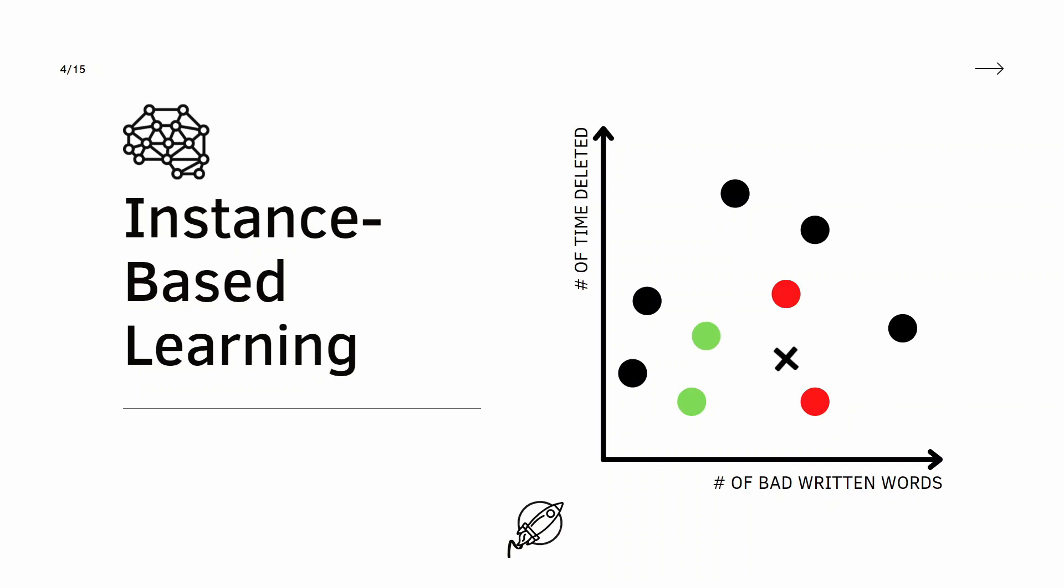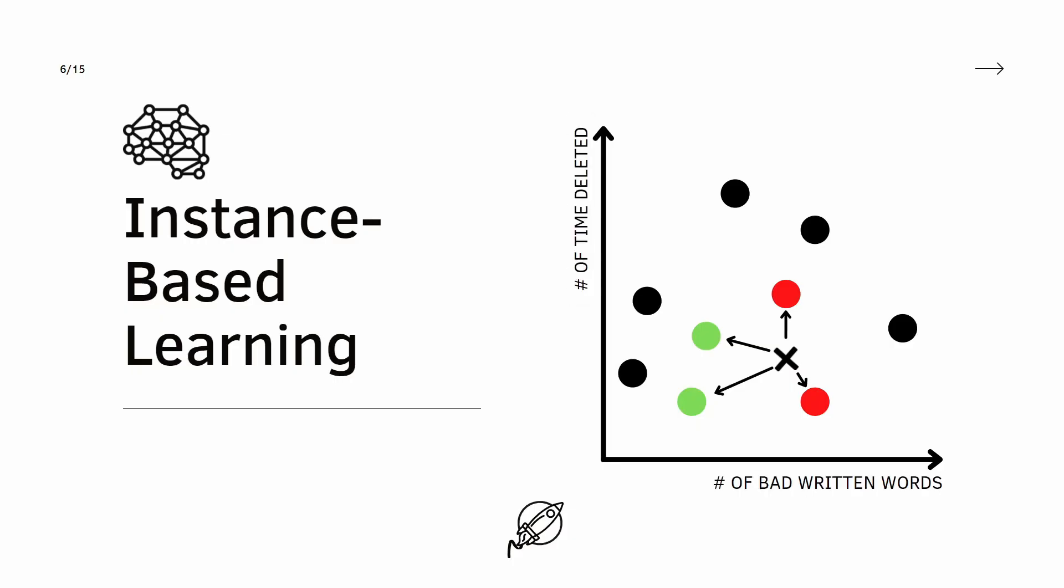And I have a question for you. Based on what I just talked about, this new data point marked as X is more similar with green or red. If you said red, you nailed it. And here is why. The system will take into consideration the similarity measure and in this case it is more similar with the red ones since they are closer. The system will continue to do the same for all the new data points based on this similarity measure.